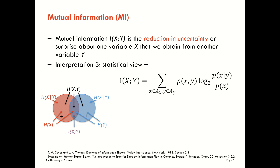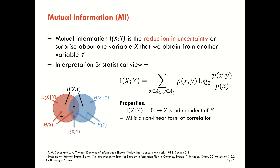In this short video we're going to look at some further interpretations of how we can understand mutual information. The next interpretation is a statistical view: we can think about getting a zero result for mutual information between x and y as being an equivalent statement to saying that x is independent of y, or equivalently that y is independent of x.